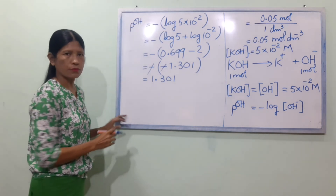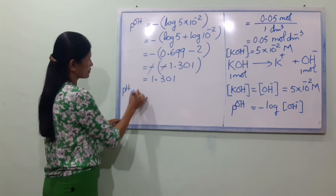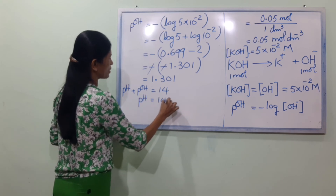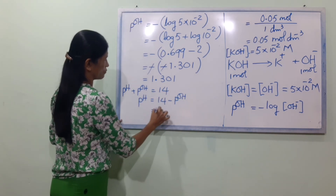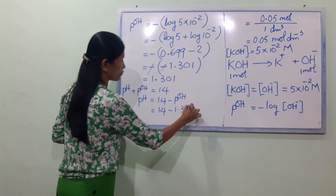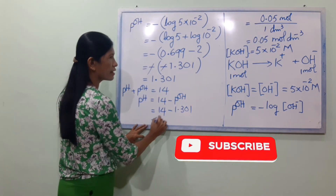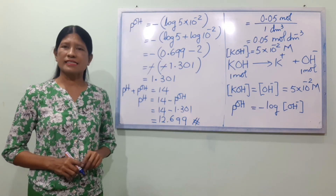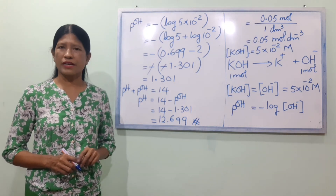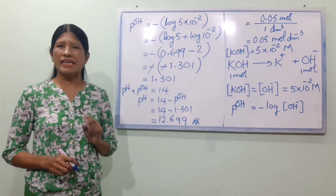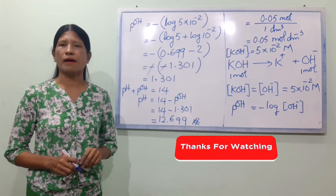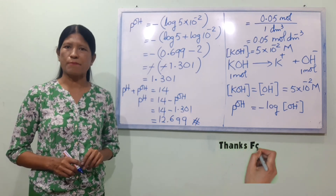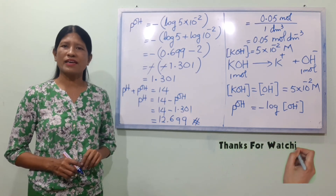pOH is equal to pH plus pOH equals 14. So pH plus pOH equals 14. pH equals 14 minus pOH. See you next lesson.